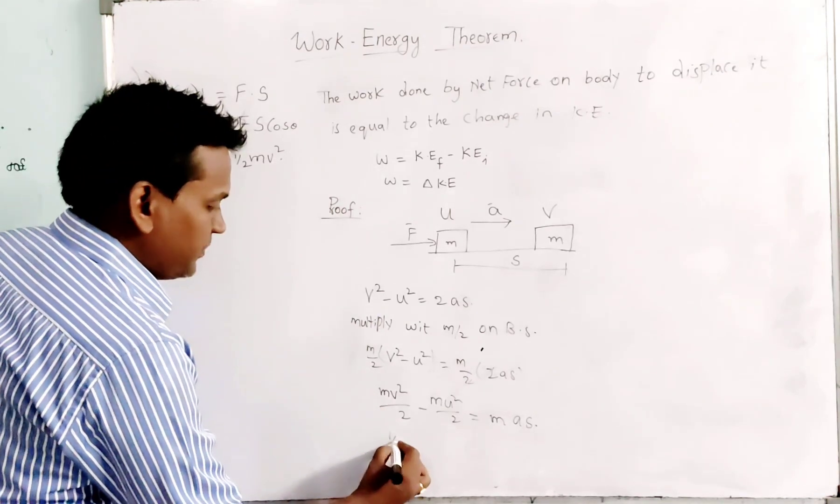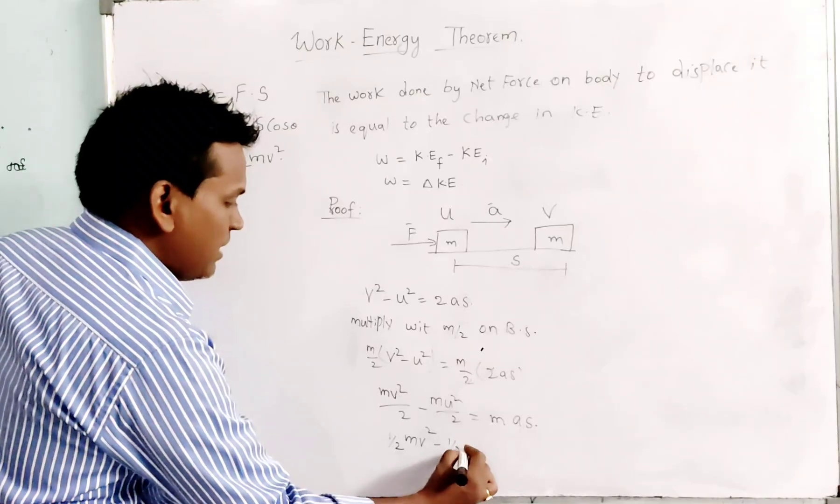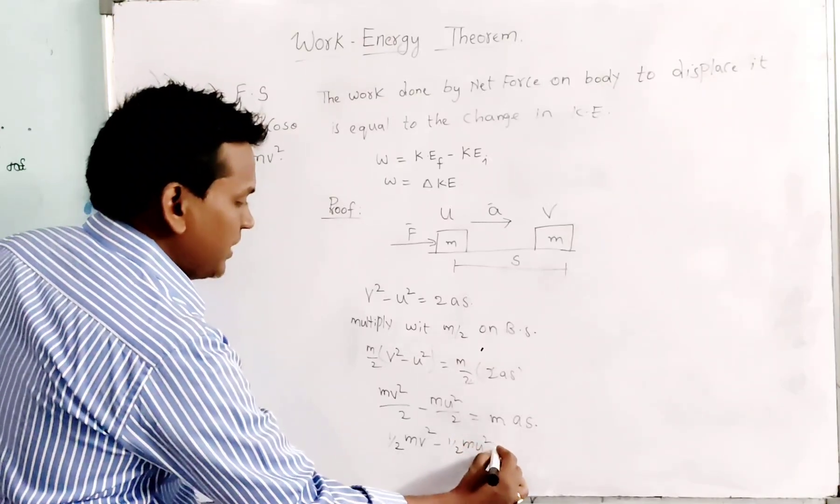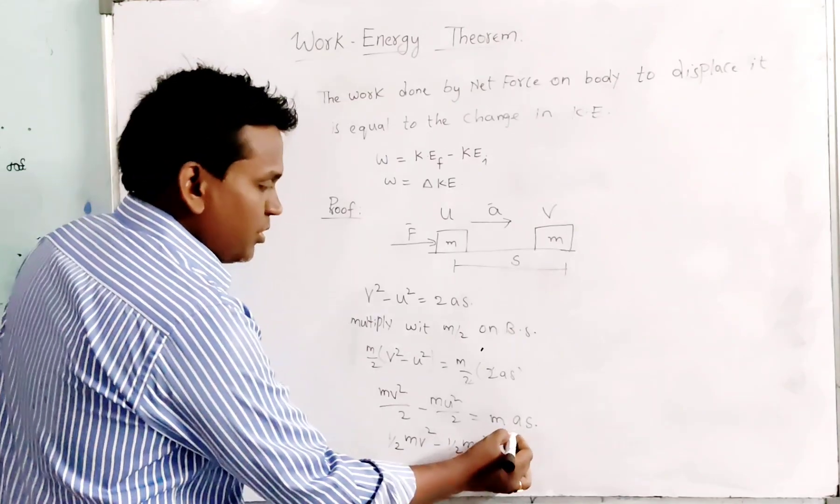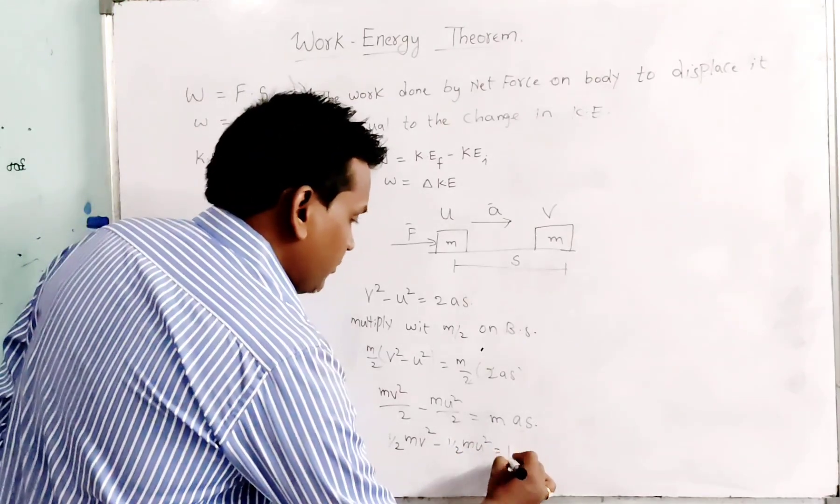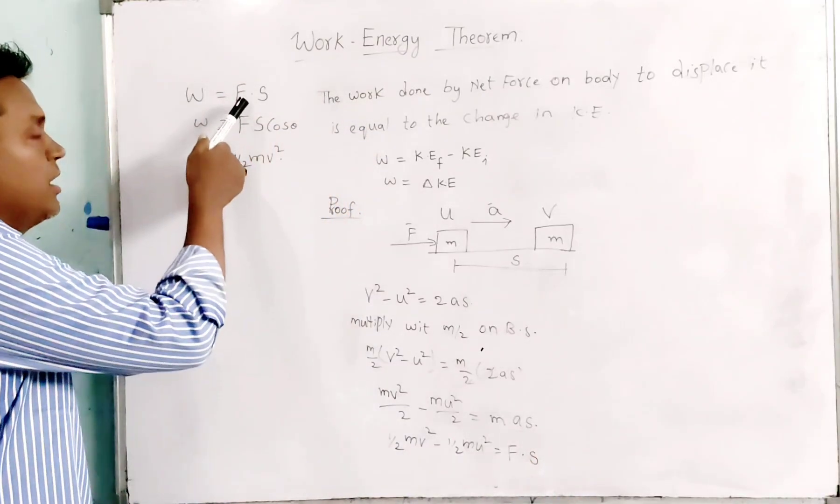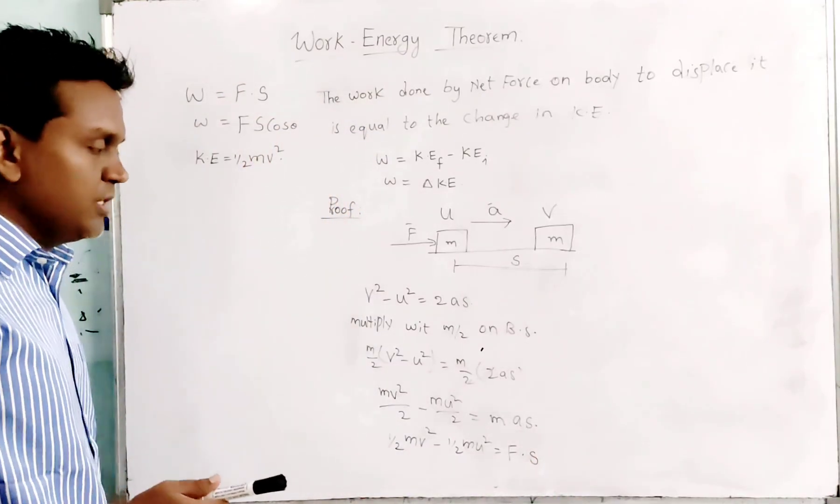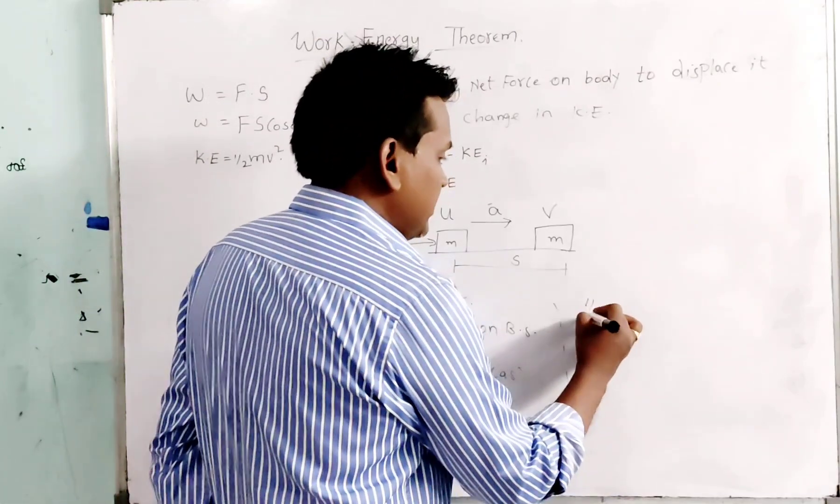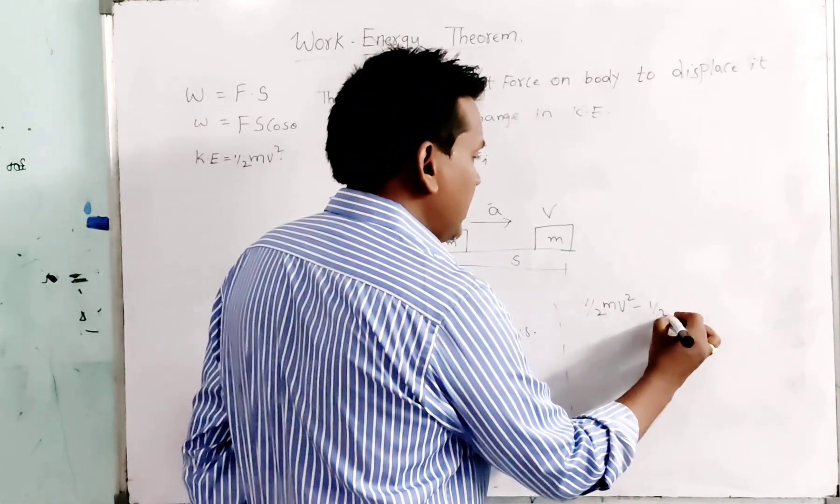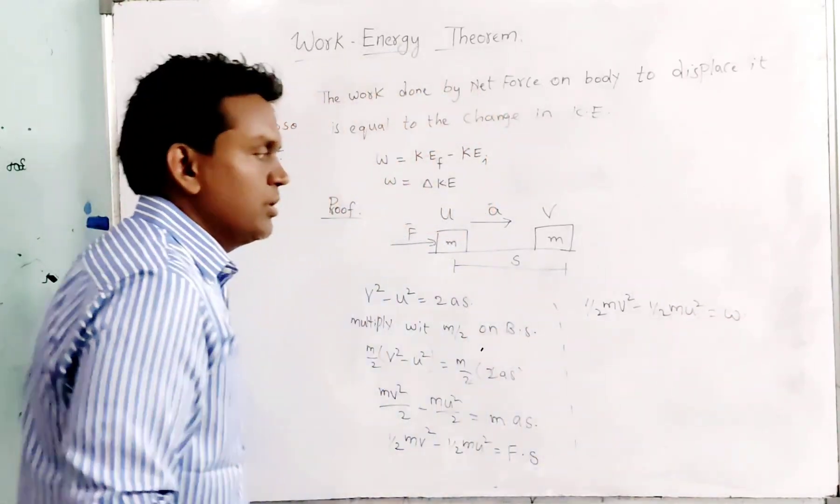This can be written as half MV square minus half MU square. That equals, see from Newton's second law of motion, MA is force. So force into displacement. We already discussed that force into displacement is equal to work.